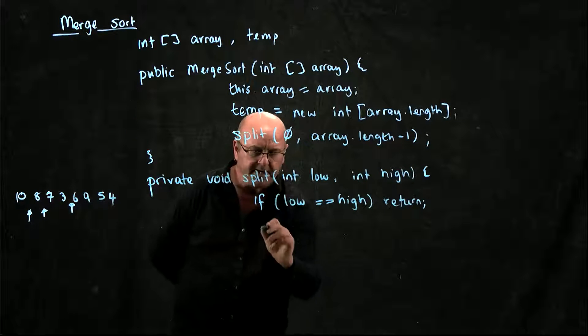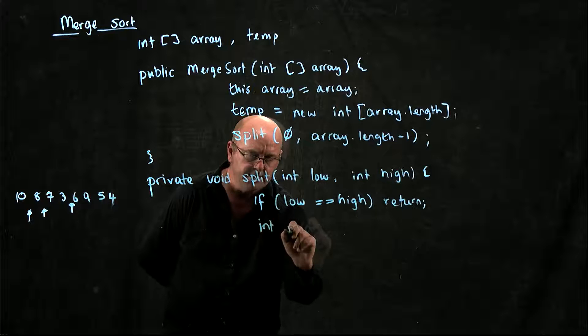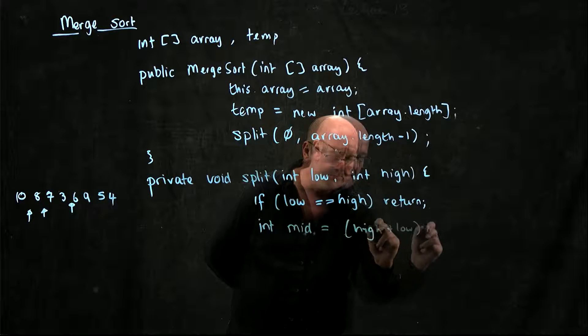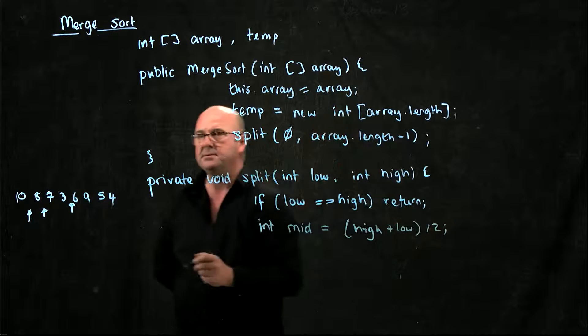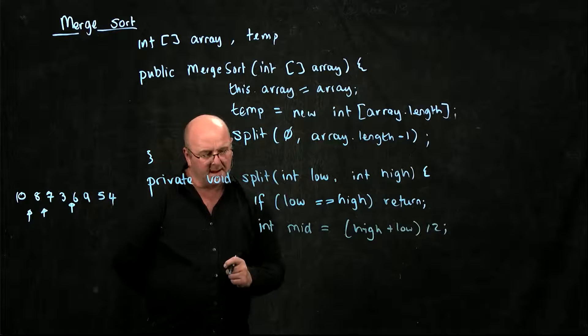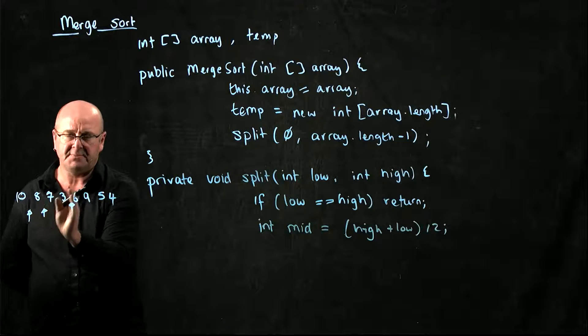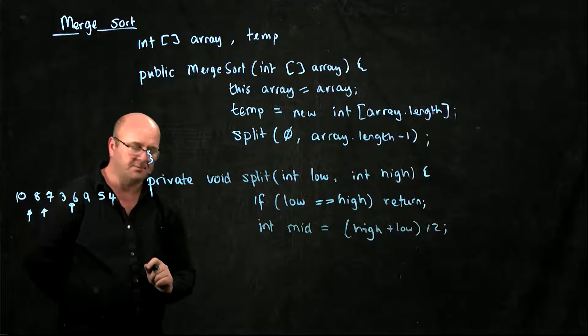So let's find our midpoint, which is really just high plus low divided by two. And then we're going to split from the low point to the midpoint, and from the midpoint to the high point.